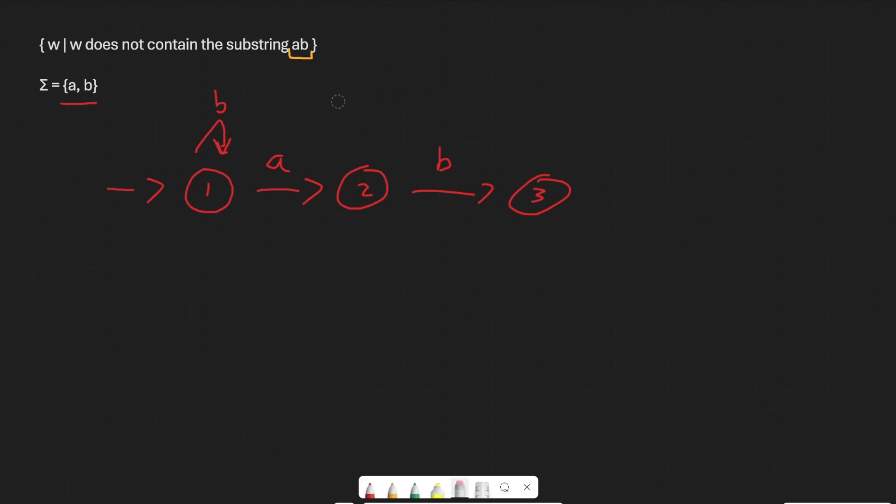But what if we, now we're going on to state two. We see at state two, we have a b arrow, but we need an a arrow. So where does the a arrow come from? Well, let's say we have an input string. We start with a, so we get to state two, and then we have another a, and then we have a b. We still have our substring ab here, so theoretically it should get to the final state three and be invalid.